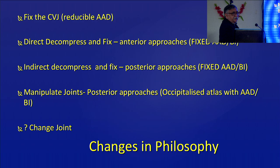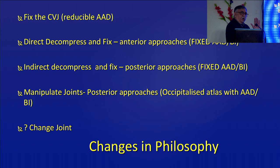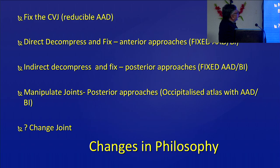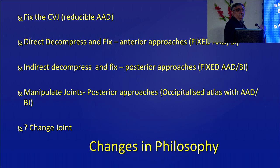How has thinking about these problems changed? The earliest thought was: fix the CV junction — if it is reducible, fix it in the reduced position, whichever way you can. Then somebody said just fixing is not enough; sometimes it doesn't move, and if you fix in a non-reduced position it could be dangerous. Then came the idea to decompress — go anterior, take out the odontoid process, then fix. Then somebody said no, indirect decompression: don't directly attack the odontoid, but manipulate the joint, reduce it, and fix it.